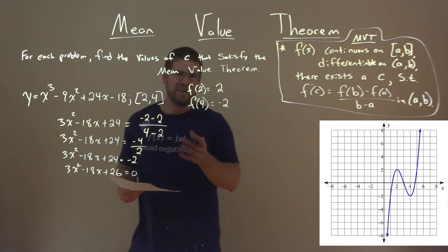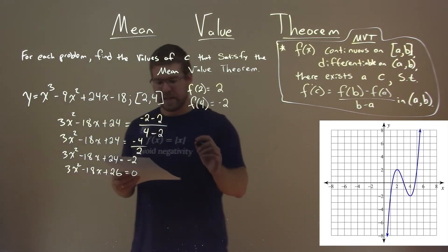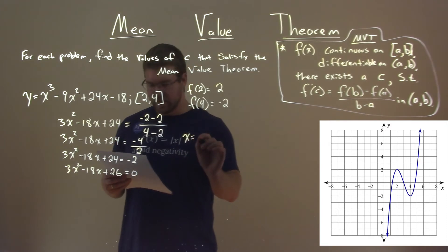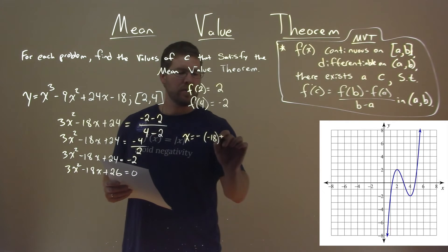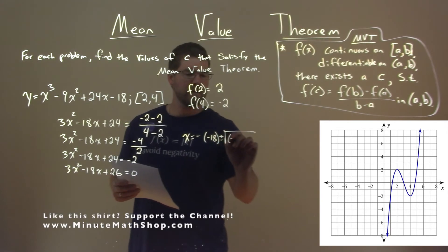So, setting that up, x equals negative b, negative 18, plus or minus the square root of negative 18 squared,